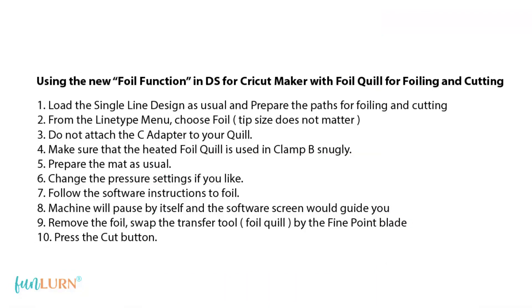We prepare the mat as usual. Here we can change the pressure settings if we like. Then we follow the instructions on the software to foil. The machine will pause by itself and the software screen will guide you to do the next steps, which are to remove the foil, swap the transfer tool (in this case the Foil Quill) with the fine point blade, and then press the cut button. It is as simple as that.